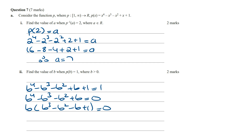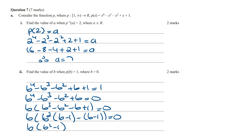Inside the brackets we have a cubic expression and we can factorize this using the grouping method. Taking b squared as a common factor from the first two terms gives b squared times b minus 1, then minus b minus 1, equals 0. Simplifying, this becomes b times b squared minus 1 times b minus 1 equals 0.